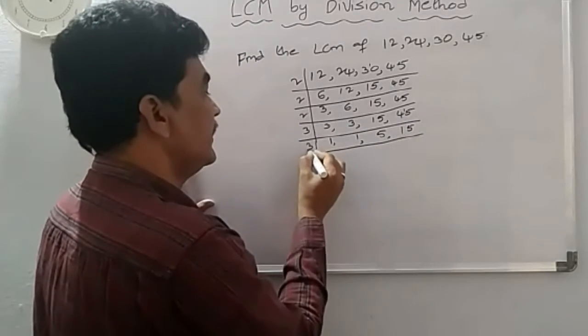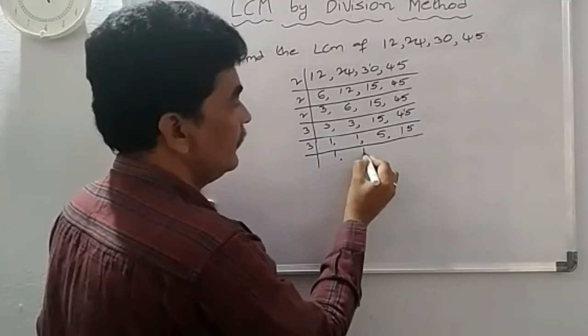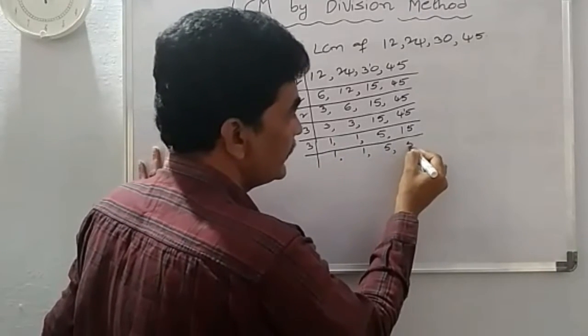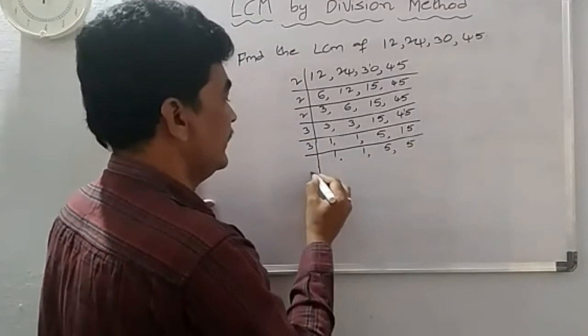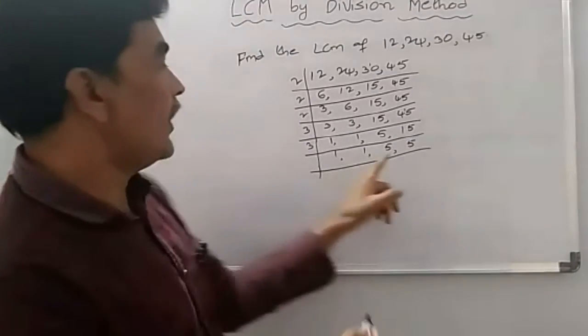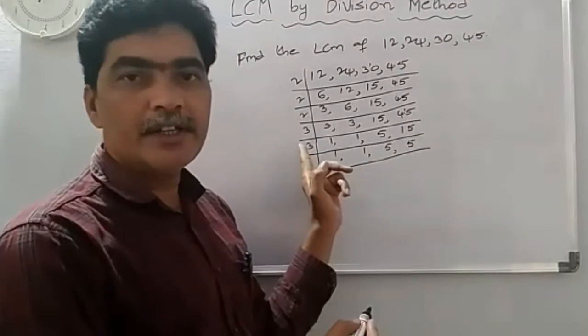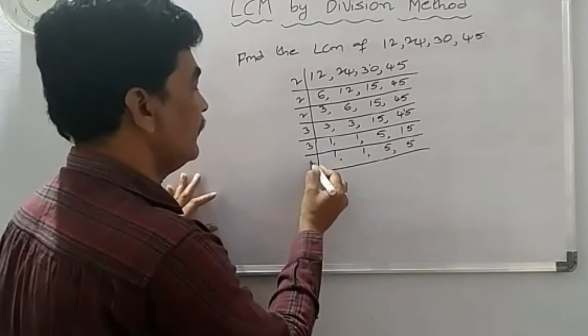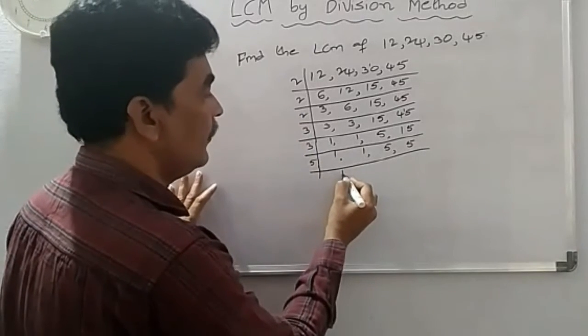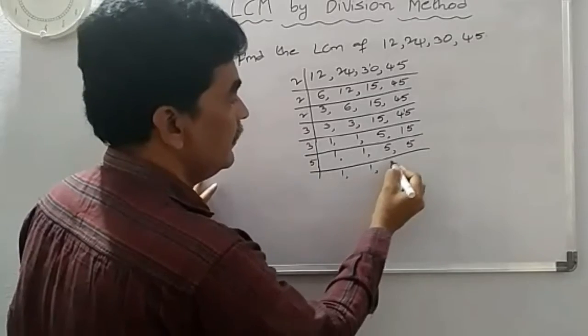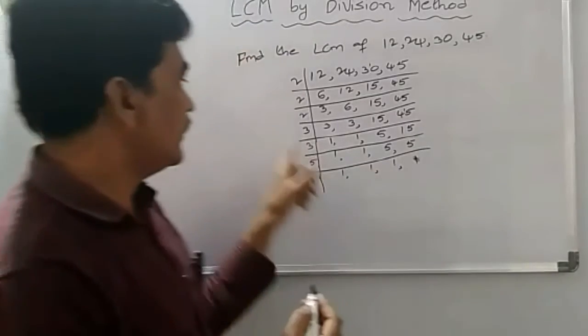Again, 3, 5. 5 is not divisible by 3. Next number, 5 only. 1, 1, 1, 1, 1, 1, 1 only.